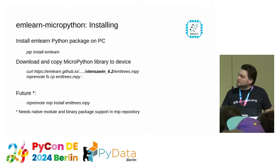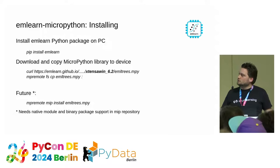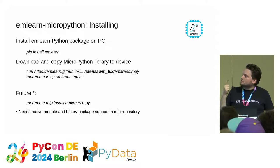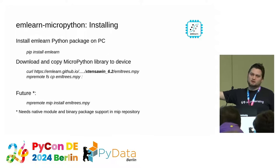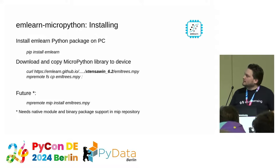To install emlearn MicroPython: the emlearn package you use on your host PC you install with pip as usual. Then the MicroPython library, which goes onto the device, you download from GitHub. Those bolded filename extensions — like xtensa 6.2 — relate to the architecture and MicroPython version; the docs specify which file to use for each MicroPython version and ESP32 variant. Then you copy that to the file system using MPRemote. Ideally this would just work with MIP install, but right now support for native or binary packages is not yet in the MIP repository — hopefully that will be there in the future.